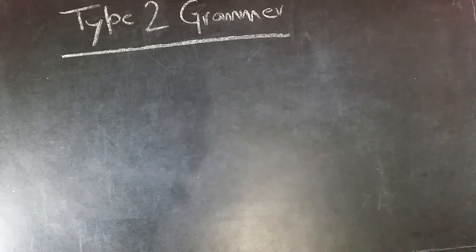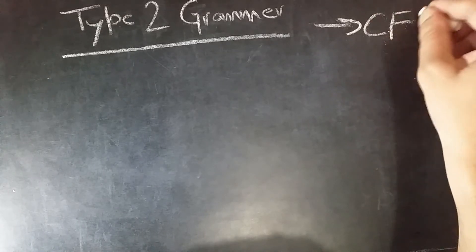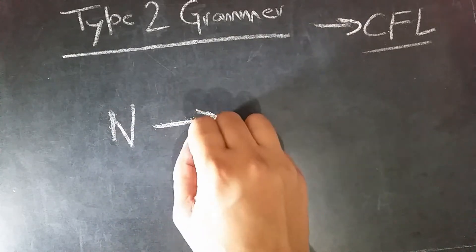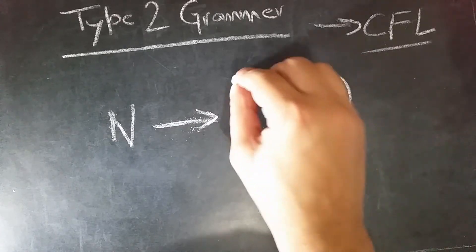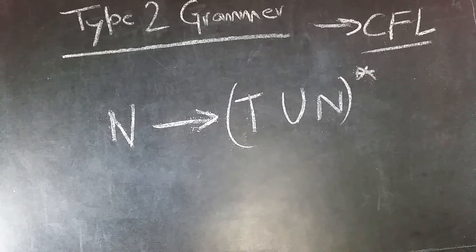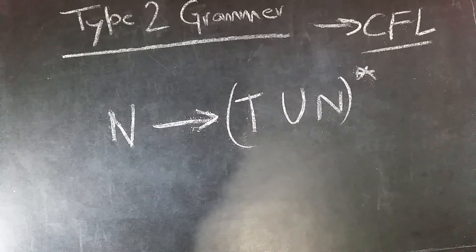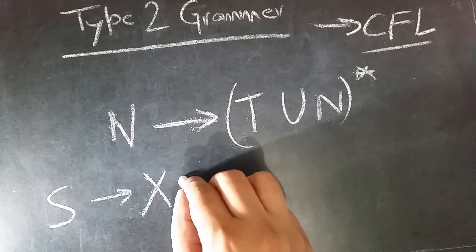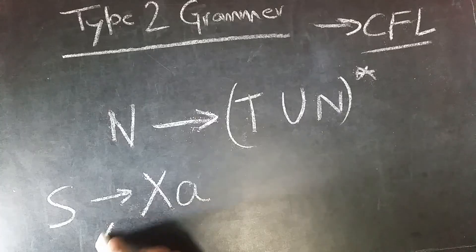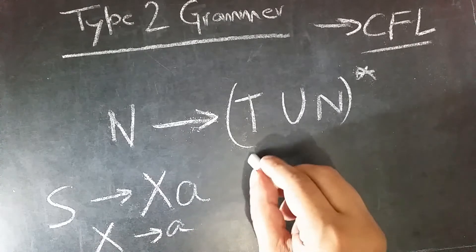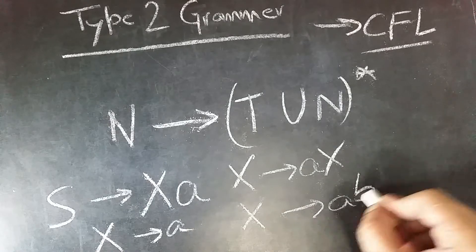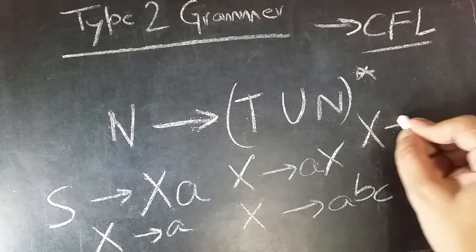Now let's see type 2 grammar. Type 2 grammars generate context free languages. The production is of the form where a non-terminal produces a string of terminals and non-terminals. These languages are recognized by non-deterministic pushdown automata. Examples include: a non-terminal which generates a non-terminal followed by a terminal, a non-terminal which generates a terminal and non-terminal, a non-terminal generating a string of terminals, or a non-terminal generating epsilon.